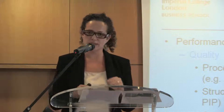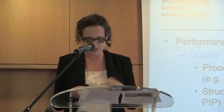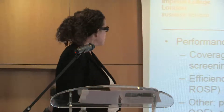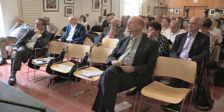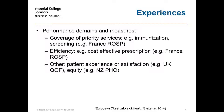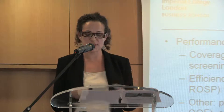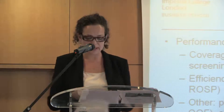When outcomes are targeted, they tend not to focus on mortality and morbidity — because it's extremely hard to link them with performance — but on intermediate clinical outputs. Many policies also combine different domains: coverage for priority services like prevention, immunization, screening of chronic conditions; some focus on efficiency, like the French case on incentives to prescribe generics; patient experience and satisfaction, like the Quality and Outcomes Framework in the UK; and equity, like in New Zealand.